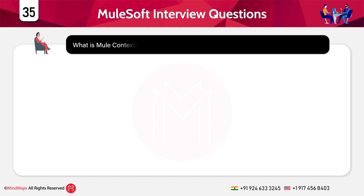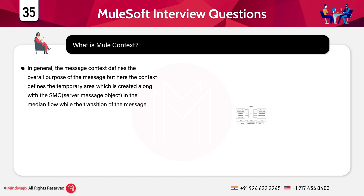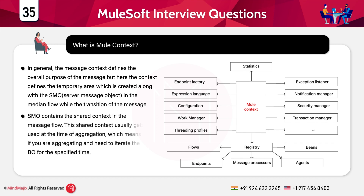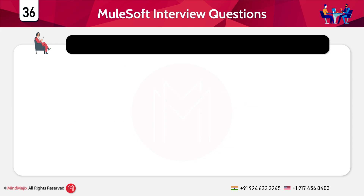What is Mule context? The Mule context defines the temporary area created along with the SMR in the mediation flow during the transition of a message. The SMR contains the shared context in the message flow. This shared context gets used at the time of aggregation — the aggregating context maintains data between fan-out and fan-in primitives. The data present in the request flow cannot persist throughout the request and response flow because it only belongs to the request business object.